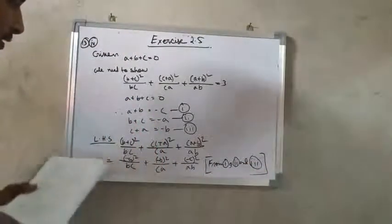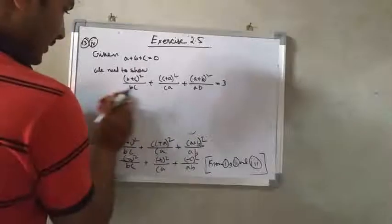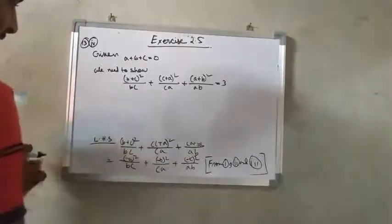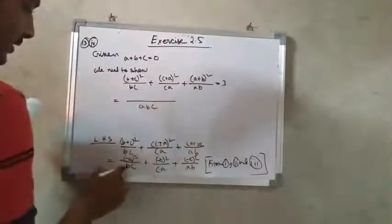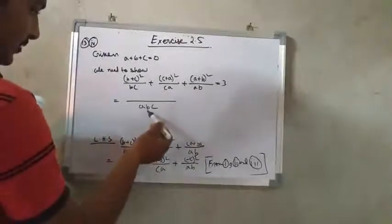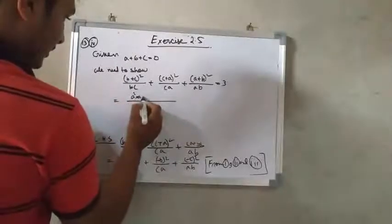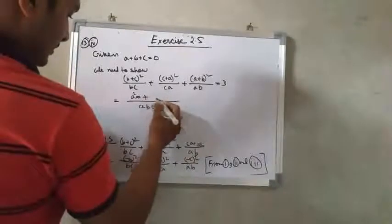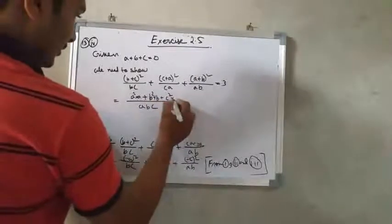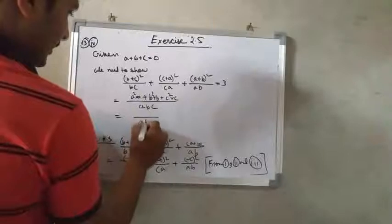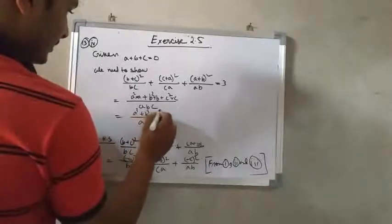The next step — I am taking the LCM. The LCM of BC, CA, and AB is ABC. So we get: A squared times A, plus B squared times B, plus C squared times C, all over ABC. That gives us A cube plus B cube plus C cube over ABC.